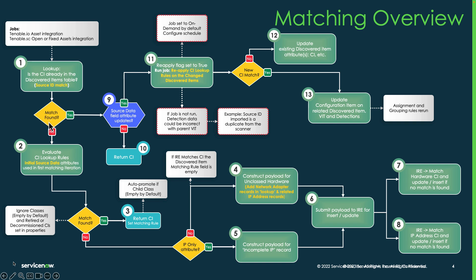If we don't find a match using that source ID, then we're going to go into the CI lookup rules. Once we get into the CI lookup rules, if we found a match and it's not part of any kind of ignore class, or retired or decommissioned CI — and we'll get to this a little bit later — then we're going to return that CI. If we didn't find a match, then we're going to go into the IRE to see if the IRE can make a match. If the IRE can't make a match, then it's going to construct a payload depending on the data that's contained in that asset.